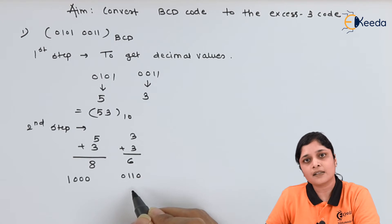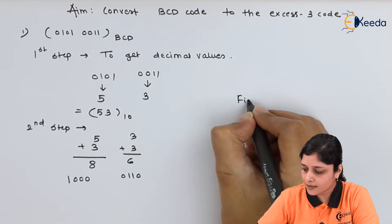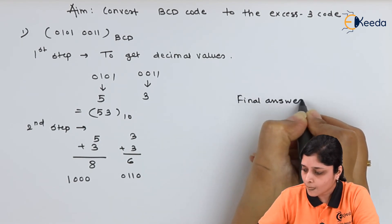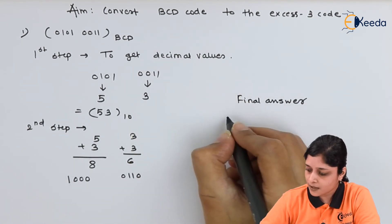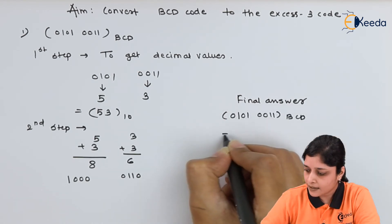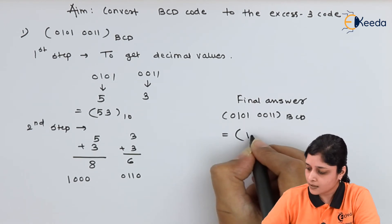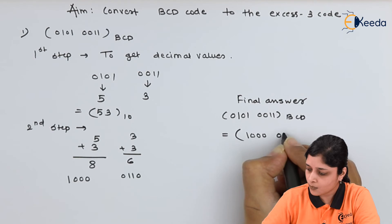So this is the answer consisting of plus 3 means you got your XS3 code. So finally you can write your answer as write down BCD which is your question and its XS3 equivalent is 1000, 0110.